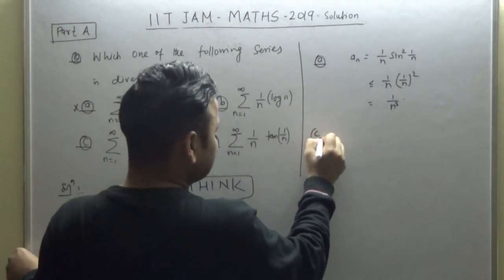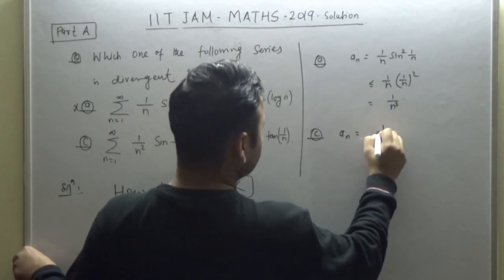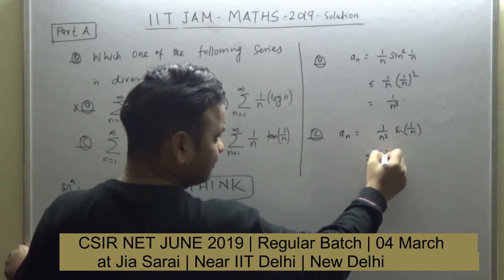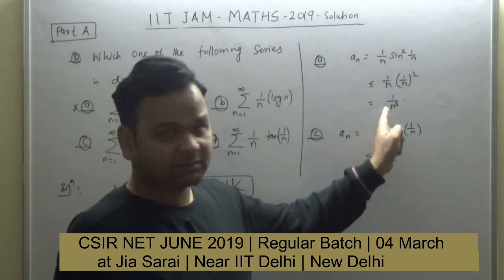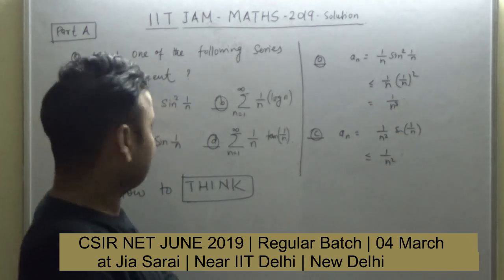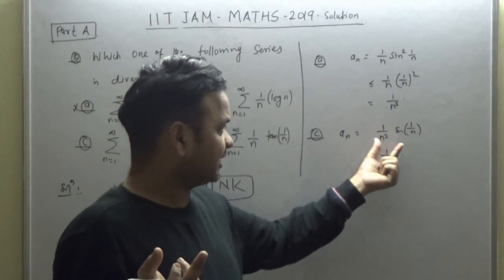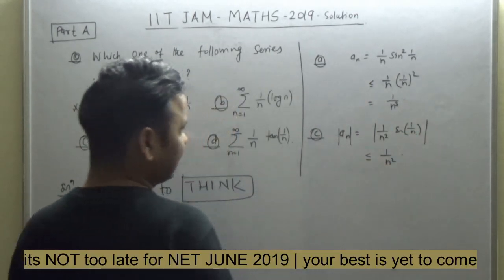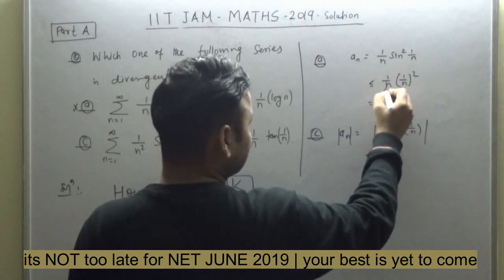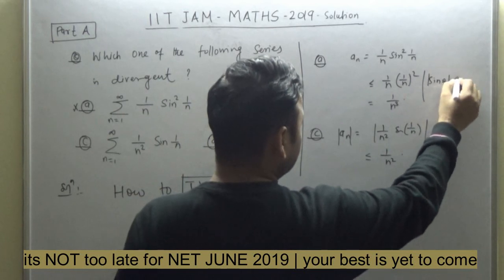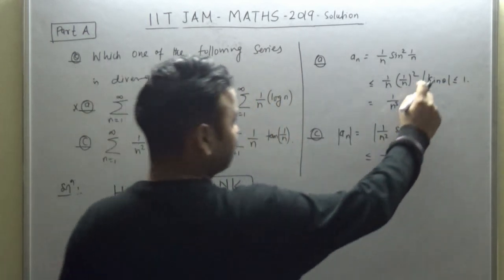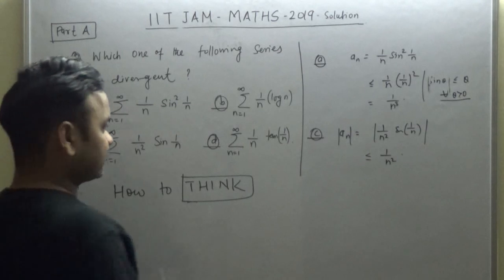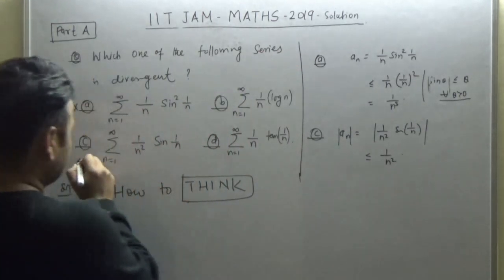Now let's look at series (C). The nth term is 1/n² · sin(1/n). Since sin θ ≤ 1 for all values of θ, we have |1/n² · sin(1/n)| ≤ 1/n². For series (A) we used sin θ ≤ θ for positive θ; here we use |sin θ| ≤ 1. So 1/n² · sin(1/n) ≤ 1/n², and since sum of 1/n² converges, series (C) is also convergent — not divergent.